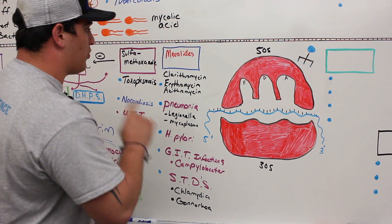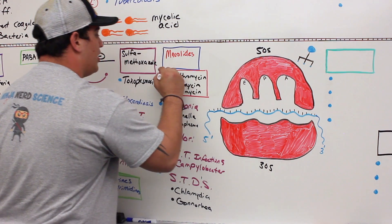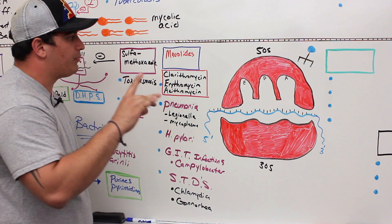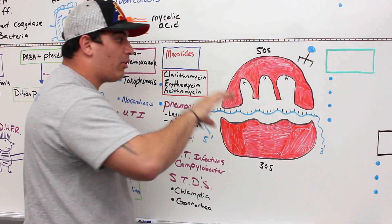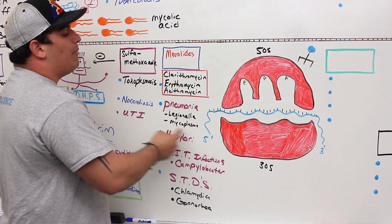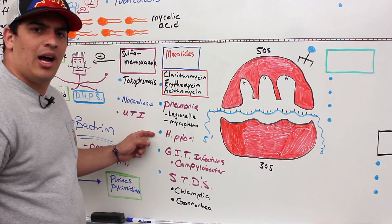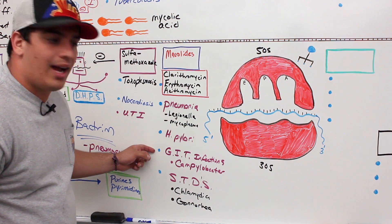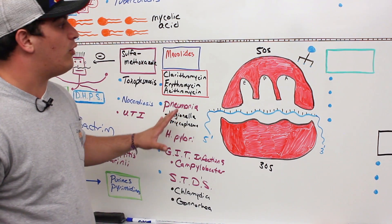To recap macrolides: the drugs are azithromycin, clarithromycin, and erythromycin. They treat gram positive and gram negative bacteria — clarithromycin has slightly better gram negative coverage. Their mechanism of action is inhibiting the ribosome from moving along the mRNA, preventing elongation of the peptide chain. They treat pneumonia caused by Legionella or Mycoplasma, H. pylori-related peptic ulcers, GI tract infections caused by Campylobacter, and sexually transmitted diseases like chlamydia and gonorrhea.